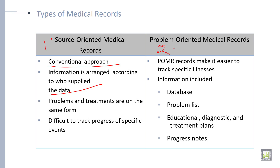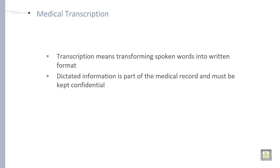Under problem-oriented medical records, it is easier to track a specific illness. Information included in this type consists of a database, problem list, education, diagnostic and treatment plans, and progress notes.